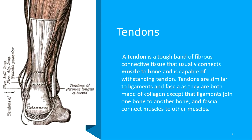A tendon is a tough band of fibrous connective tissue that connects muscle to bone, capable of withstanding strong tension. Tendons are similar to ligaments and fascia because they're made of collagen, except ligaments join bone to bone and are a little stronger. The connection between muscle and muscle is fascia. For test-taking purposes, know the definitions of tendon, ligament, and fascia.